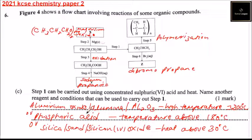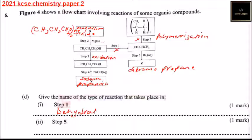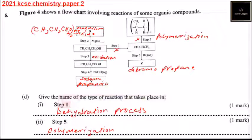Part D: give the name of the type of reaction that takes place in Step 1 and Step 5. In Step 1, propanol is dehydrated to get propene — the process is dehydration. In Step 5, molecules are added in a process called polymerization.